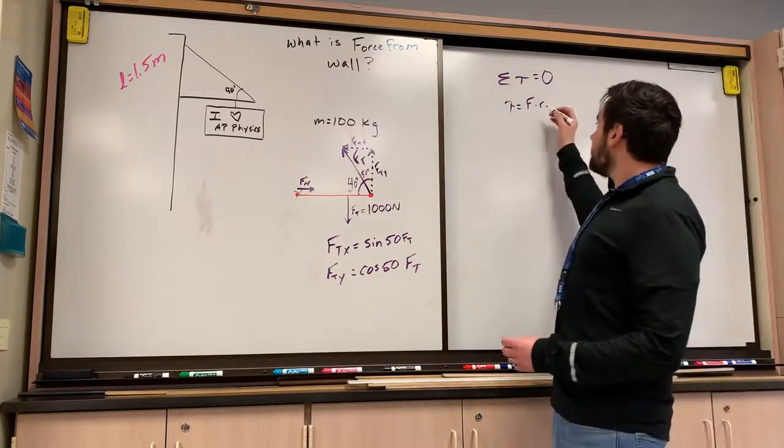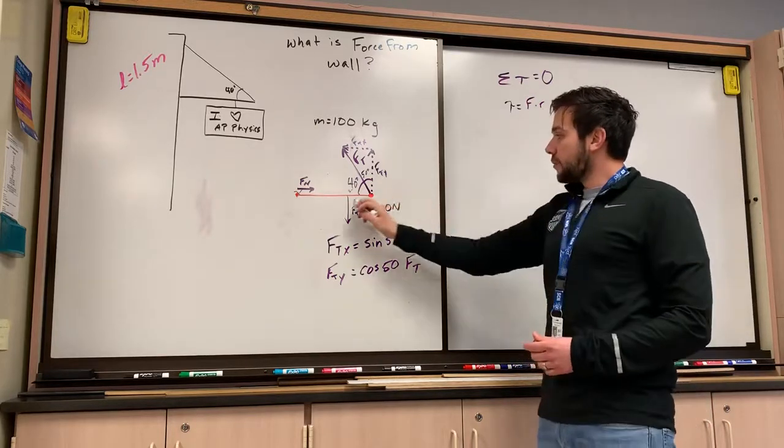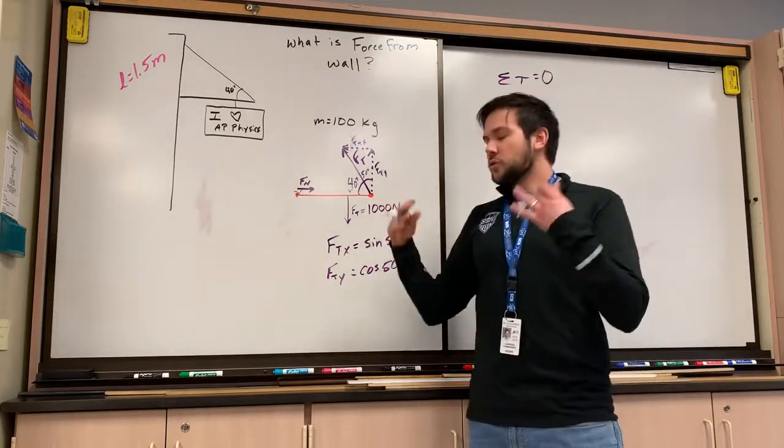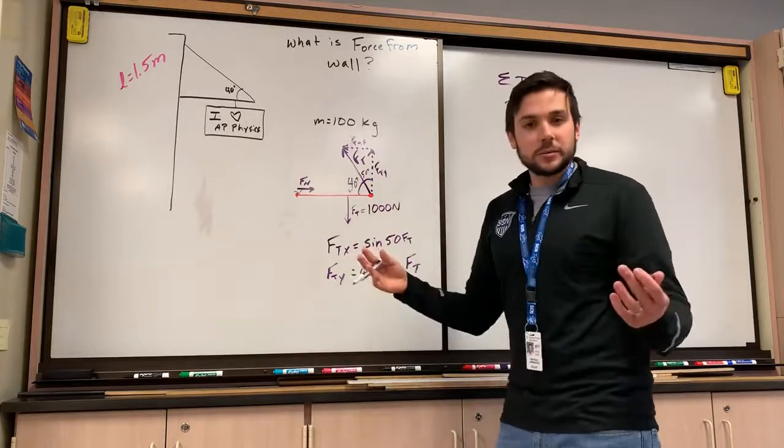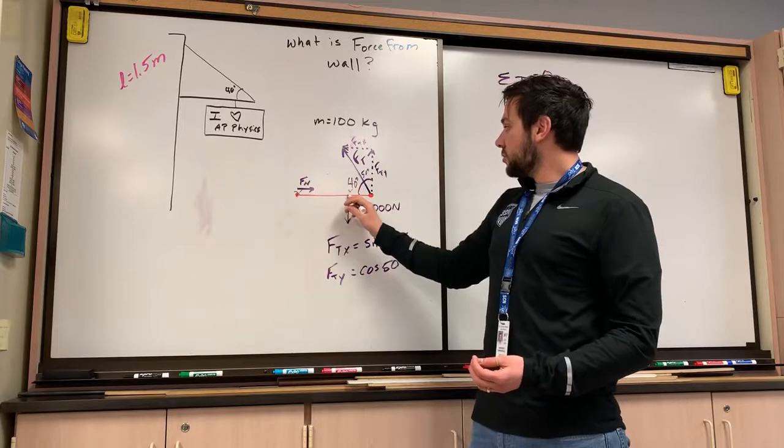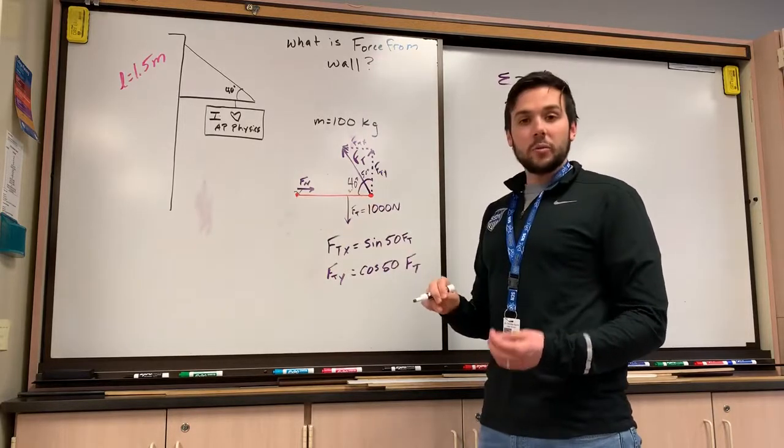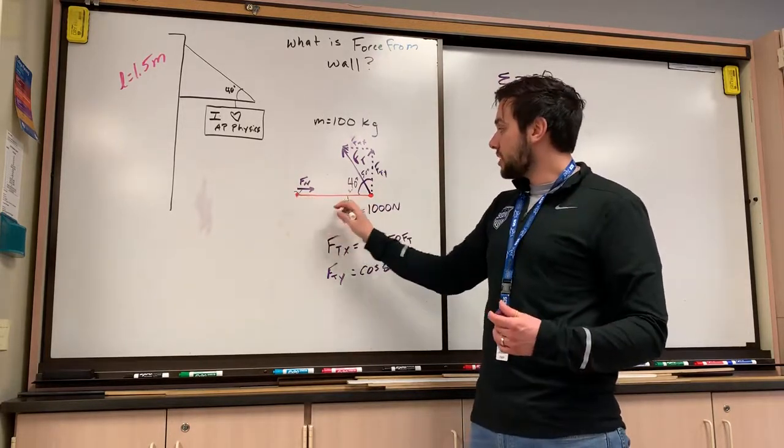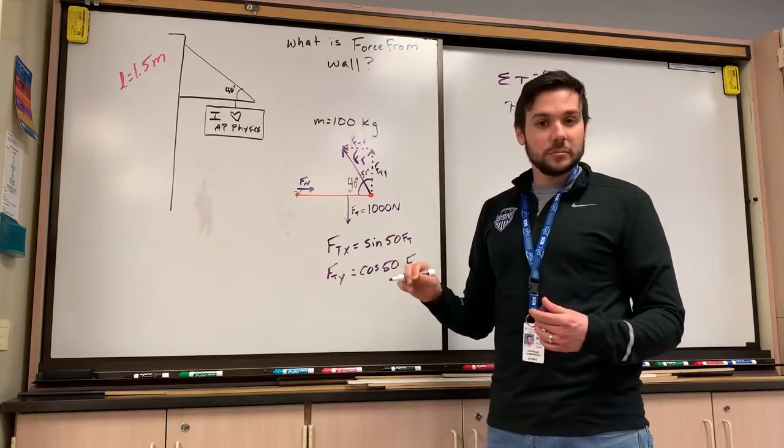Now, this R value is different for each one because that R value is not just the radius. Don't think of it as like the distance between the middle and the end of a circle. It's the distance from the middle to where the force is applied. And by middle, I mean the axis of rotation and where the force is applied.